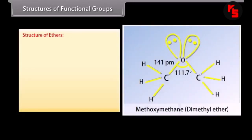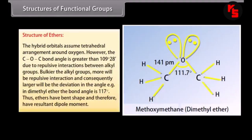In the structure of ethers, the hybrid orbitals assume a tetrahedral arrangement around oxygen. However, the C-O-C bond angle is greater than 109°28' due to repulsive interactions between alkyl groups. Bulkier alkyl groups result in more repulsive interaction and consequently a larger deviation in the angle. For example, in dimethyl ether the bond angle is 117°. Thus, ethers have a bent shape and therefore have a resultant dipole moment.